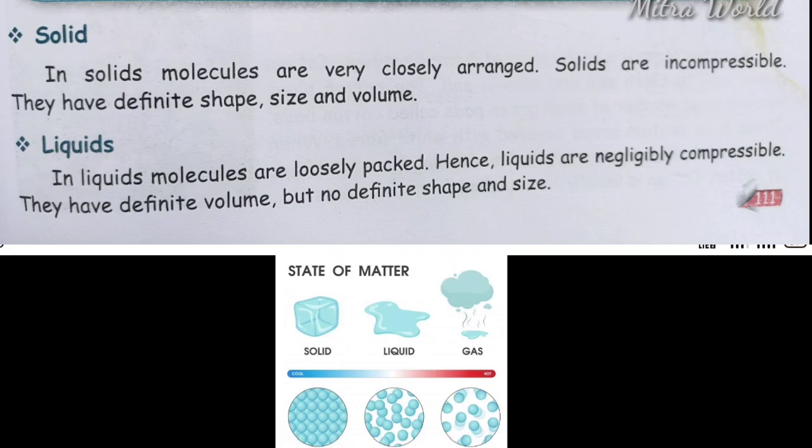For example, a stone has a defined shape, size, and volume. Water is an example of matter in all three states: ice is solid, water is liquid, and steam is gas.